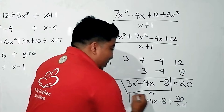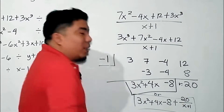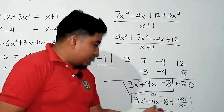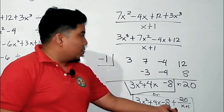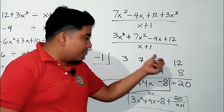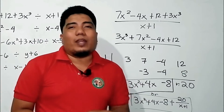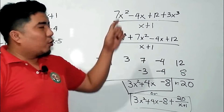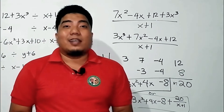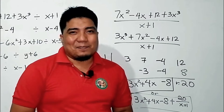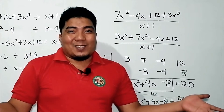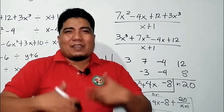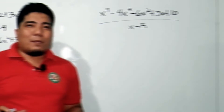If you want to check this, you multiply the quotient by the divisor and then add 20, and you will arrive at your dividend. Let's give some more examples.